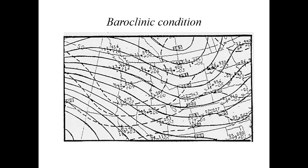Here's an example of a baroclinic condition. The solid dark lines are your height contours — lines of equal geopotential height. The dashed lines are isotherms — lines of equal temperature. Notice how the isotherms easily intersect and cross over the height contours. This results in a change of temperature: out ahead of a trough you have warm air advection with southwest winds, and behind the trough axis you get cold air advection in the northern hemisphere with northwesterly winds.